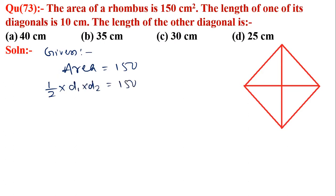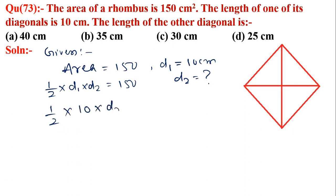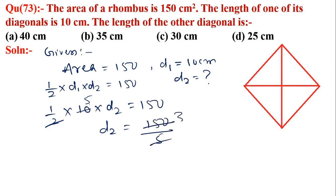Suppose the length of the first diagonal is 10 centimeters, so: half into 10 into d2 = 150. Cancelling 5, d2 = 150 divided by 5, which gives d2 = 30 centimeters.